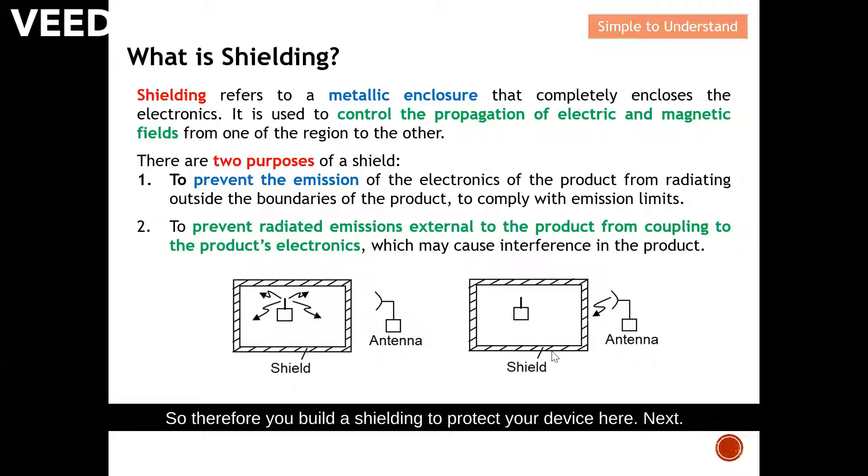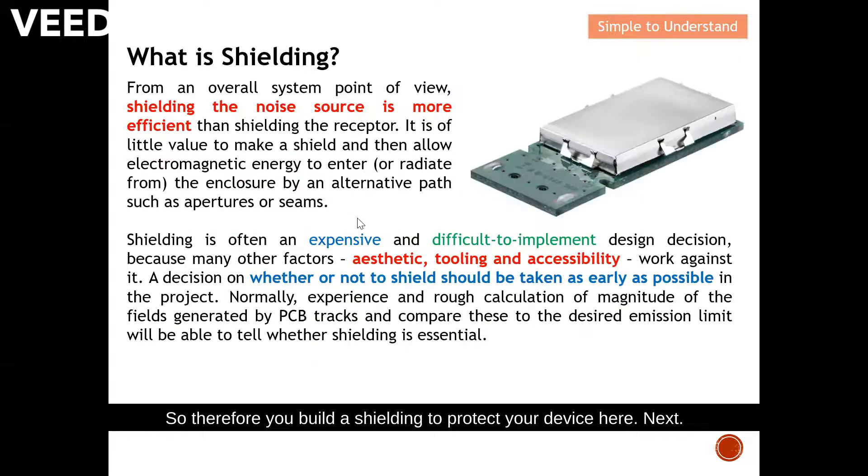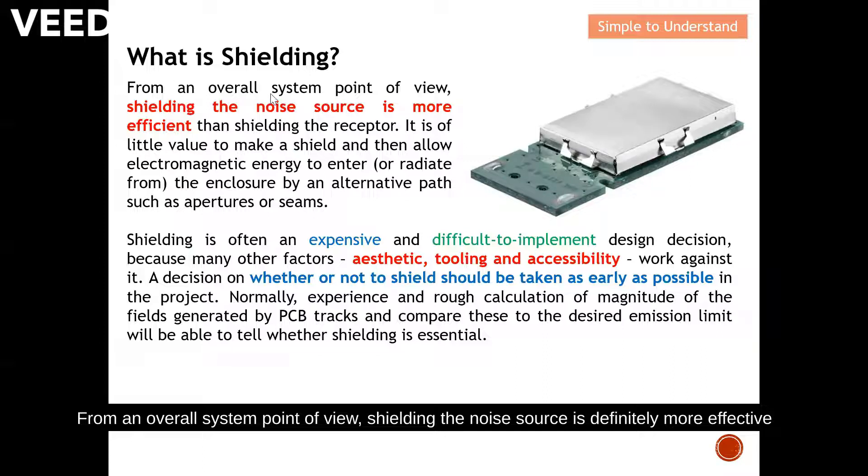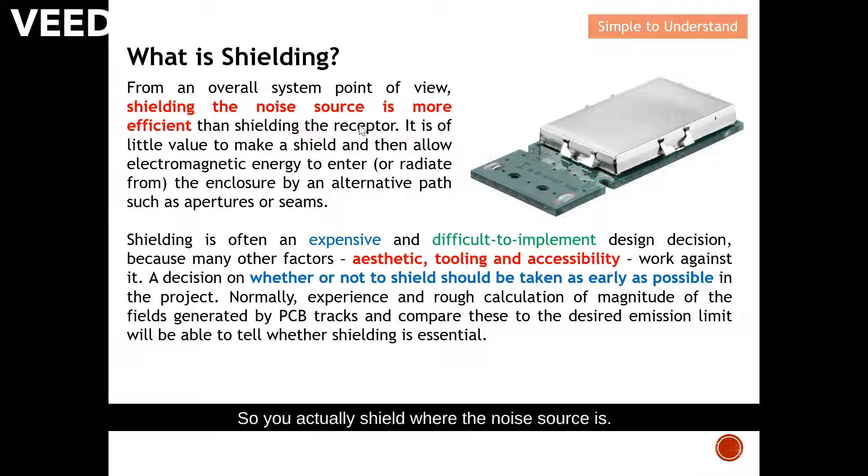From an overall system point of view, shielding the noise source is more efficient than shielding the receiver. If you know where the noise source is, shield that source. It is of very little value to make a shield and then allow electromagnetic energy to enter or leave the enclosure by an alternative path such as apertures or seams.